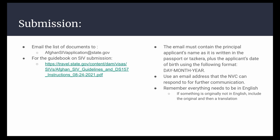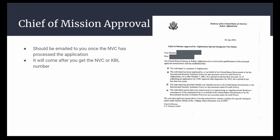Once you submit your documents to the NVC, you will receive an NVC or cable number. You will eventually receive the Chief of Mission approval letter, which should arrive within 90 days of your first submission. Once you get this letter, you can move on to Step 2.